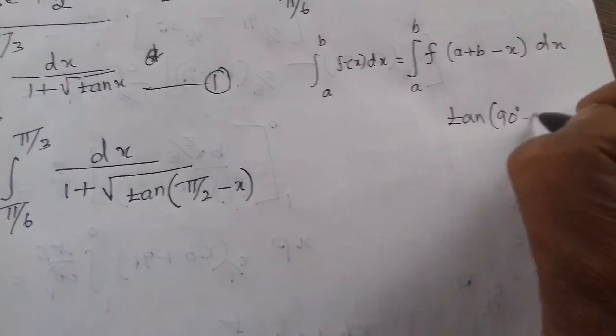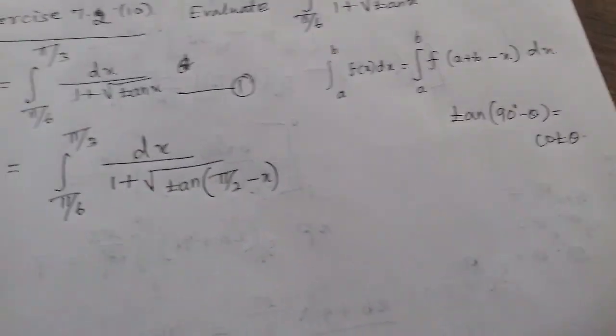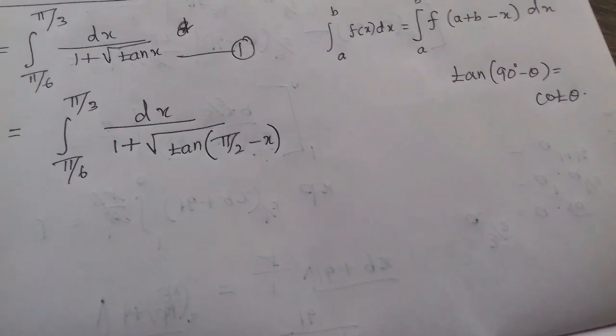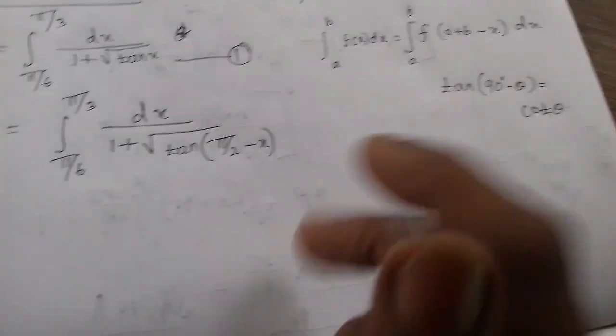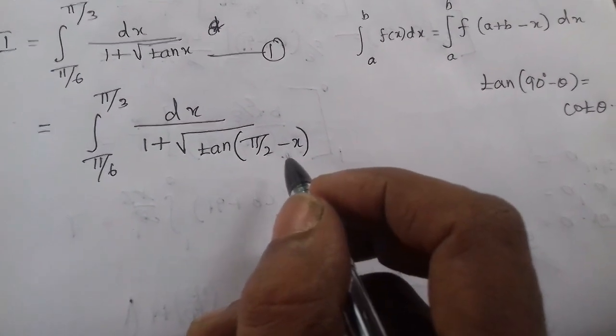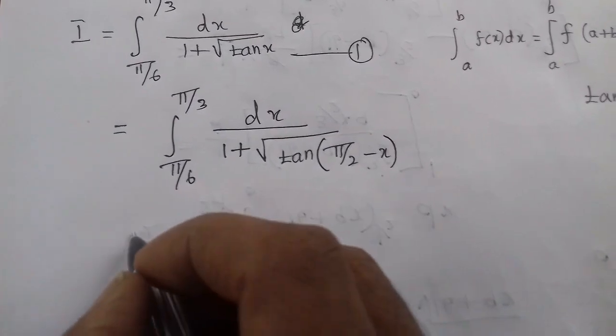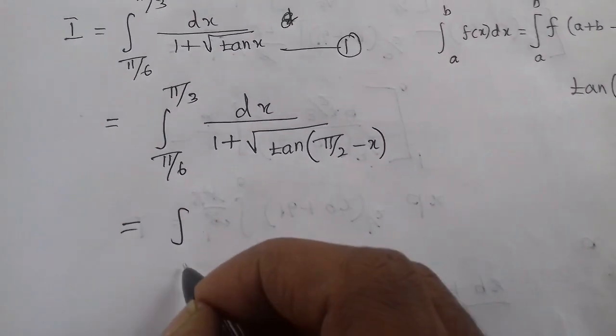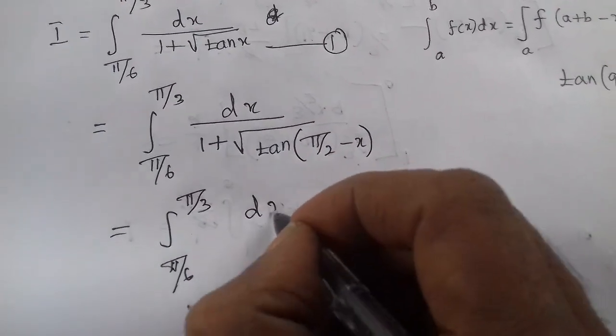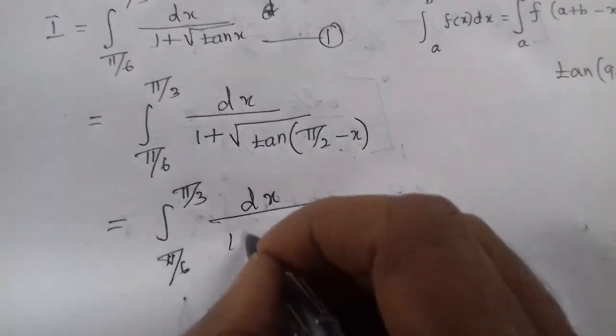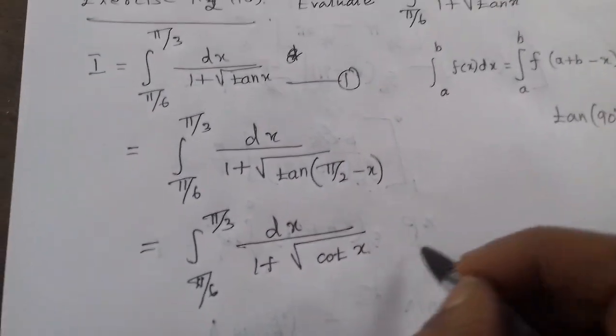Tan of 90 degree minus theta equals cot theta. Sin 90 equals cos, cos 90 equals sin. So tan becomes cot. Tan of π/2 minus x equals cot x. So at the step, integral limit π/6 to π/3, dx by 1 plus root of cot x. This is equation number two.